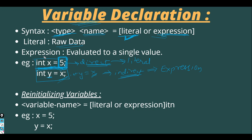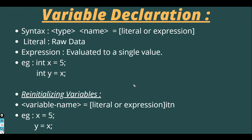Expressions are evaluated to a single value. Here y is evaluated to a single value and x is having a value of 5, but y is not directly given 5 — it is indirect, so it is an expression. Now we'll see how to re-initialize a variable.